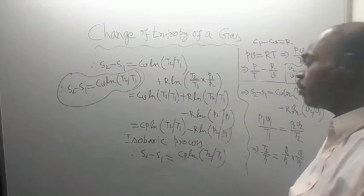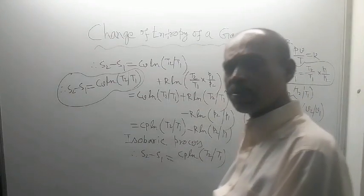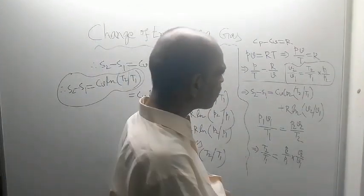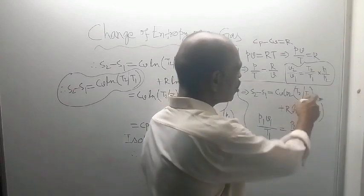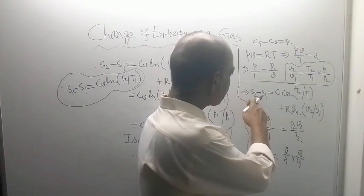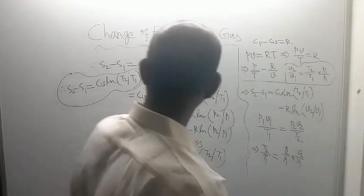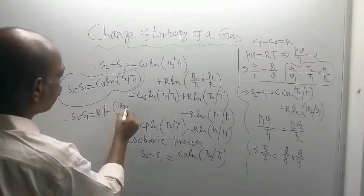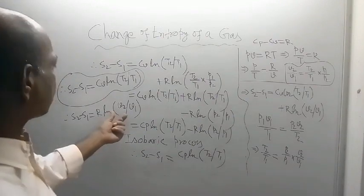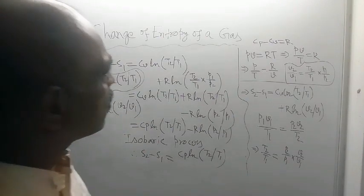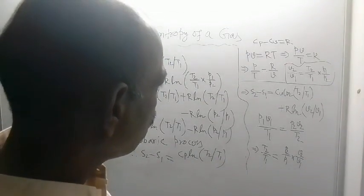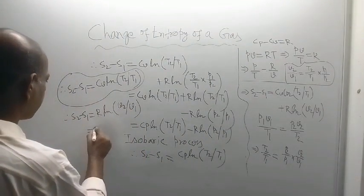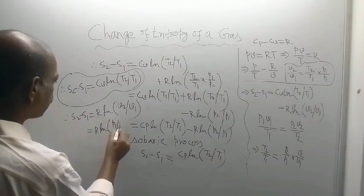For an isothermal process (constant temperature process), temperature remains constant during the process, so T1 and T2 are the same. Therefore T2/T1 = 1 and log(1) = 0. So S2 − S1 = R·log(V2/V1). You can also write this in terms of pressure: since temperature is constant, V2/V1 = P1/P2, so S2 − S1 = R·log(P1/P2).